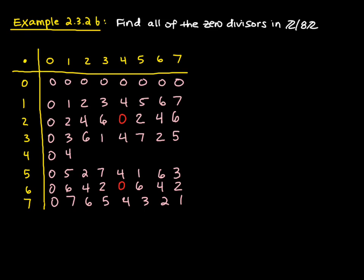Four times zero is zero, which is already there. Four times one is four, already there. Four times two is eight, which is equivalent to zero mod eight. Continuing, four times three is twelve, congruent to four. Four times four is sixteen, congruent to zero—another zero. Four times five is twenty, congruent to four.